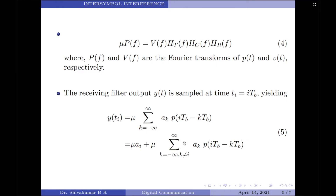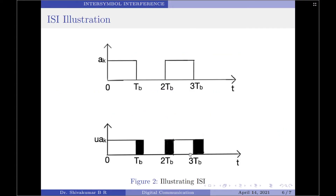Let us now discuss how and why inter-symbol interference is created. In physical terms, inter-symbol interference arises because of imperfections in the overall frequency response of the system. For example, when a short pulse of duration 1 TB seconds is transmitted through a band-limited system, the frequency components that constitute the input pulse are differentially attenuated and, more importantly, differentially delayed by the system, meaning some frequencies or amplitudes are more affected than others. Therefore, the pulse appearing at the output is dispersed over an interval longer than TB seconds.